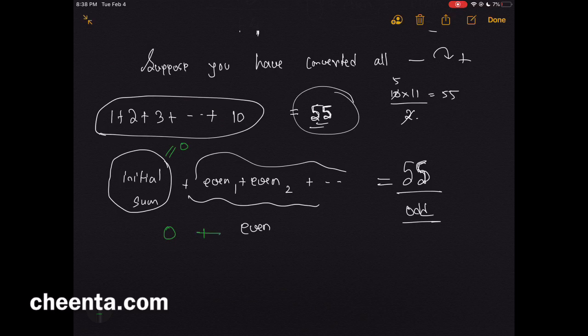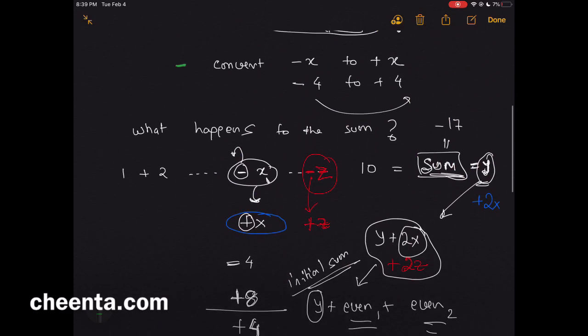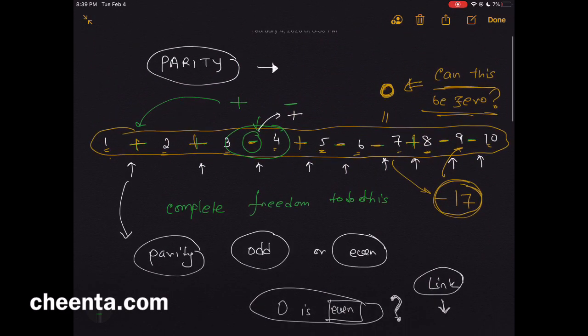The question was, can the initial sum be 0? Can this be 0? So if it is 0, then we have 0 plus even equals to odd, and we reach a contradiction. Because 0 is even, and to that if you add something even, their sum will also be even, so that cannot be equal to some odd number. And that solves the problem. You see how cleverly the notion of parity is being used in this particular problem.